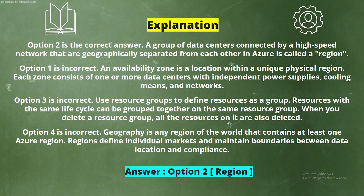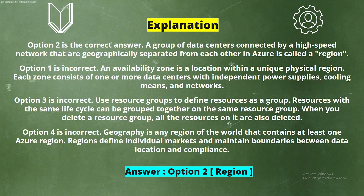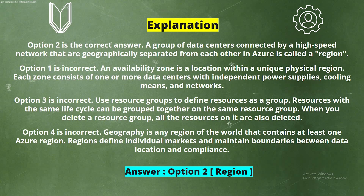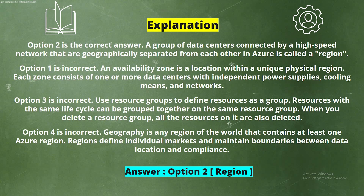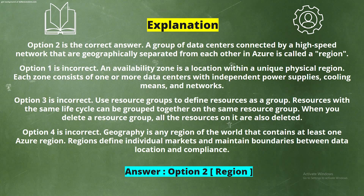Explanation. Option 2 is the correct answer. A group of data centers connected by a high-speed network that are geographically separated from each other in Azure is called a region. Option 1 is incorrect — an availability zone is a location within a unique physical region, consisting of one or more data centers with independent power supplies, cooling, and networks. Option 3 is incorrect — resource groups define resources as a group; resources with the same lifecycle can be grouped together, and when you delete a resource group, all resources on it are also deleted. Option 4 is incorrect — geography is any region of the world that contains at least one Azure region, and defines individual markets while maintaining boundaries for data location and compliance.